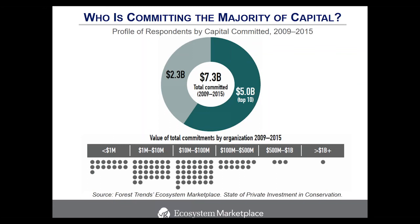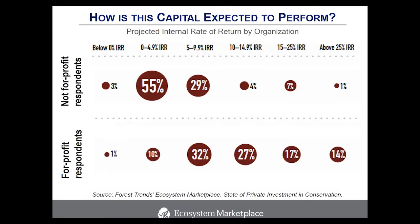The top 10 organizations committed 66% of all capital tracked from 2009 to 2015 — $5.9 billion — while the remaining $2.3 billion was committed by the other 88 organizations. Looking at the breakdown of all 98 private investors, one organization has committed over $1 billion, three have committed between half a billion and one billion, and the bulk of organizations have committed between $10 to $100 million across all years tracked.